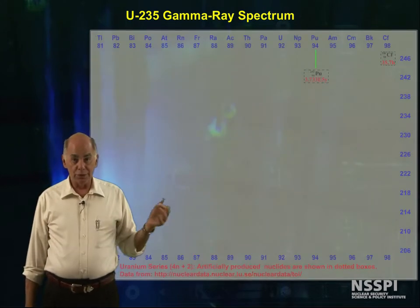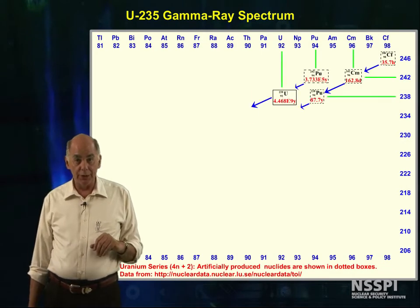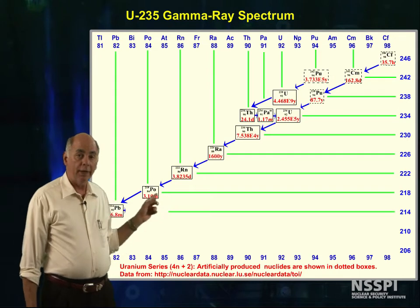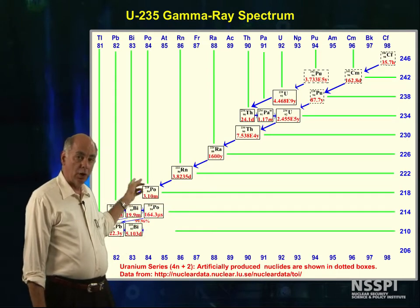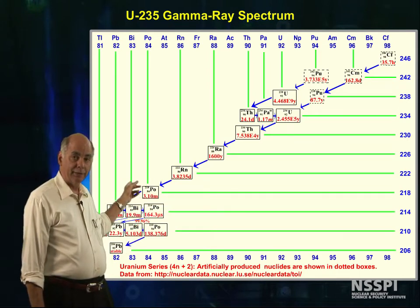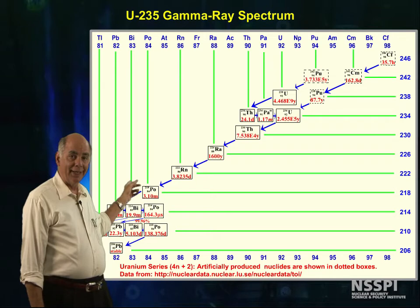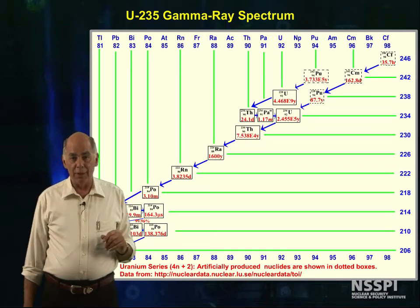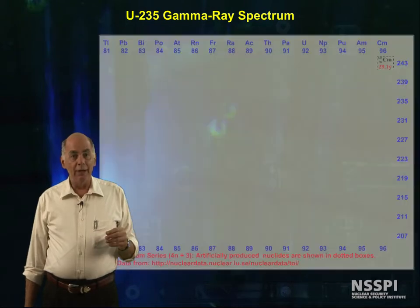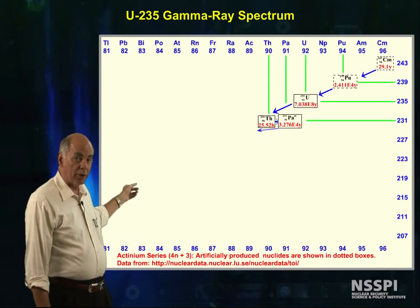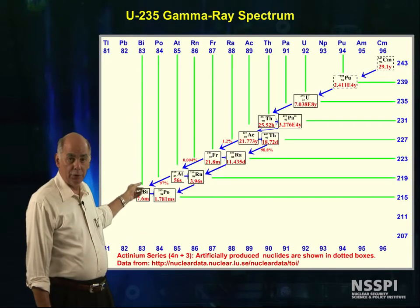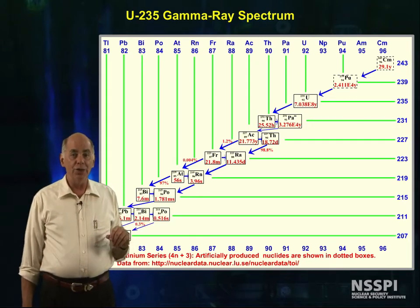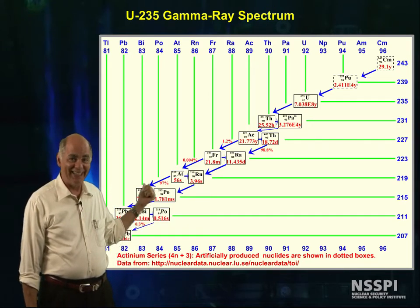We will skip the 4N plus 1 series, because we don't need it right now, and look at the 4N plus 2 series, or uranium-238. As the daughters grow in, they will emit gammas. And finally, here's the 4N plus 3, or the uranium-235 series — and it is these daughters that we didn't see in our spectrum.